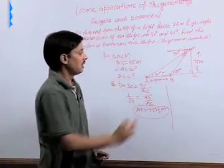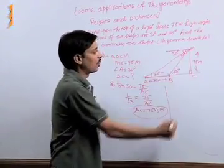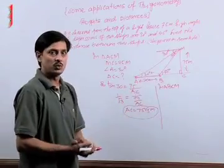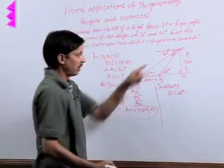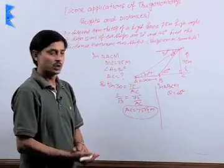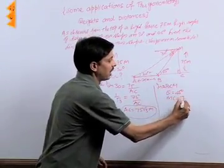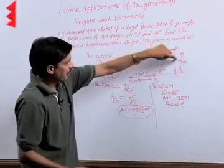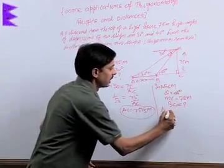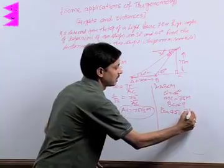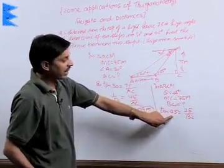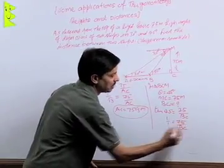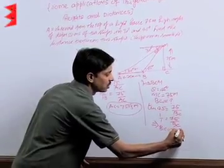Now we calculate distance BC in the second situation using triangle BCM. Here the angle of depression is 45 degrees, so the angle of elevation is also 45 degrees. The height MC is again 75 meters. Applying tan: tan 45 equals MC upon BC equals 75 upon BC. The trigonometric value of tan 45 is 1, so 1 equals 75 upon BC, giving BC equals 75 meters. The second ship is 75 meters from the foot of the lighthouse.